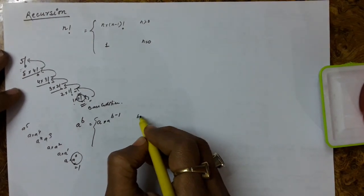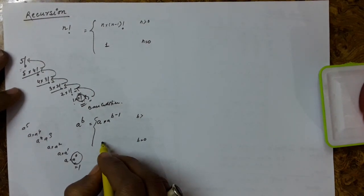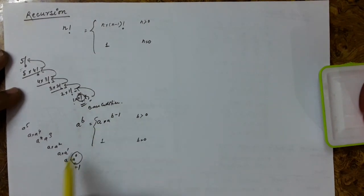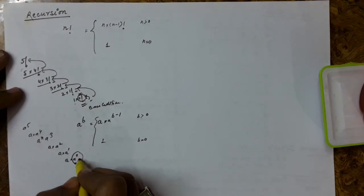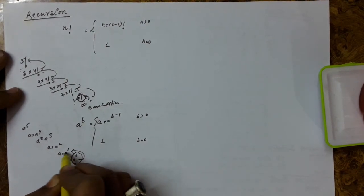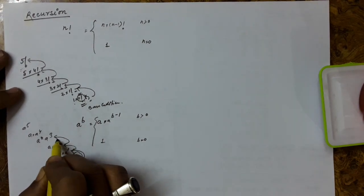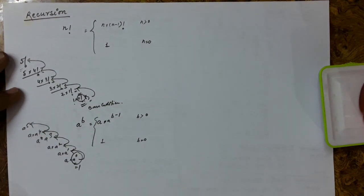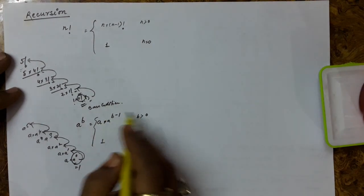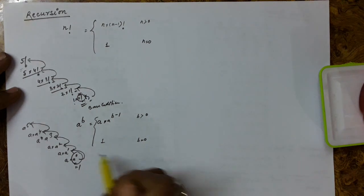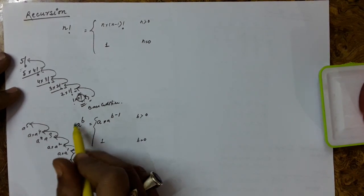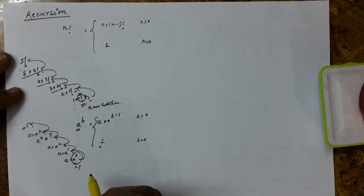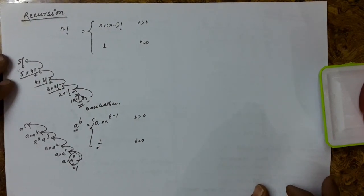The base condition is: if b is 0, then a^0 = 1. Otherwise, it is a * a^(b-1). Since you know the base value, it is returned up the chain — each computed value is returned to the caller above it, and finally the result is returned for the original call. For defining a recursive function, you should reduce the terms such that you reach the base condition, and there must be a proper value already defined for the base case.